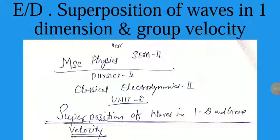Good morning friends. I am from MSc Physics Semester 2nd, Paper 5th, that is Classical Electrodynamics. I am Dr. R.C. John, Associate Professor, SBC Government. The topic for today is the Superposition of Waves in One Dimension and Group Velocity.